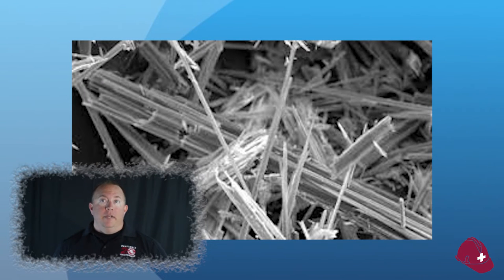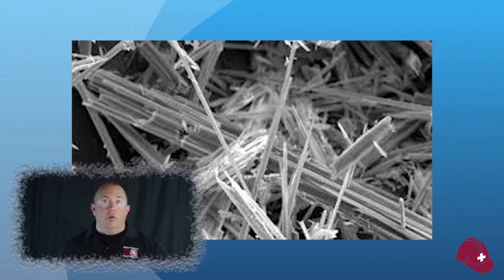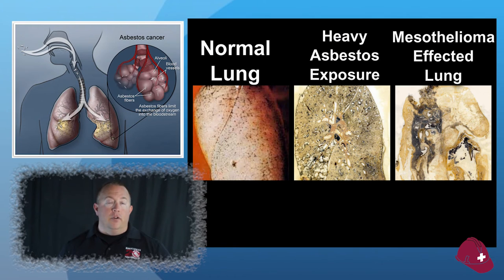Asbestos is friable, which means it breaks apart into microscopic fibers when disturbed, and its friability depends on the product. Fibers can become airborne when disturbed. Airborne fibers are needle-like and can enter the body through inhalation and ingestion. Asbestos is dangerous to workers when it is airborne — it gets into a worker's lungs and causes damage up to and including lung cancer.